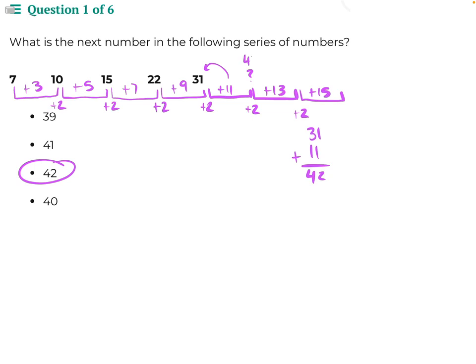So if we added 13 to 42, we would get 55, our next number in the numerical series. And then if we added 15 to that, we would get the next number in the series, which is 70.